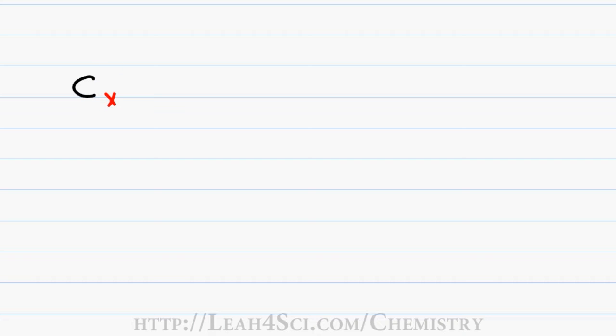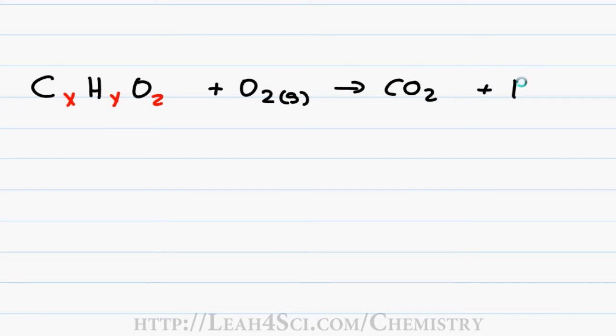You can think of a combustion reaction as a burning reaction and it follows a very standard formula. You start out with a molecule that has some number of carbon — we'll call it X — some number of hydrogen — we'll call that Y — and we can even have some number of oxygen, let's call that Z. They all react with O2, or oxygen gas, to produce two products: carbon dioxide and water.